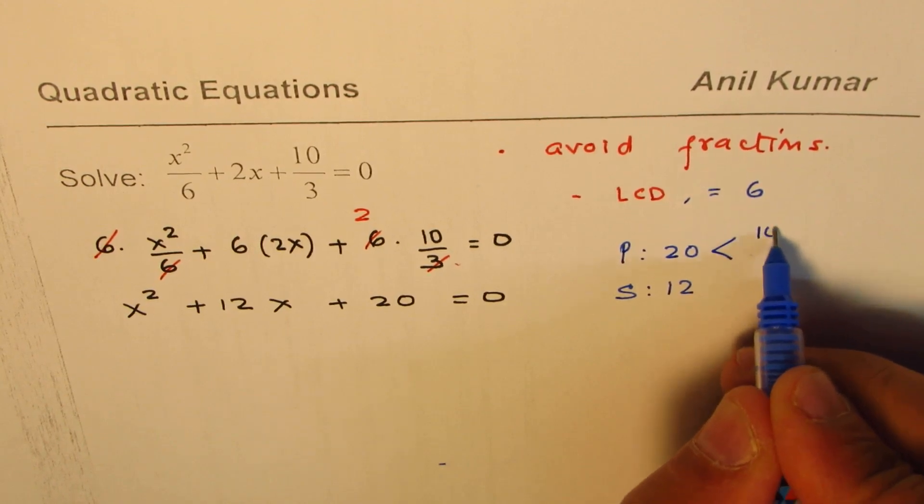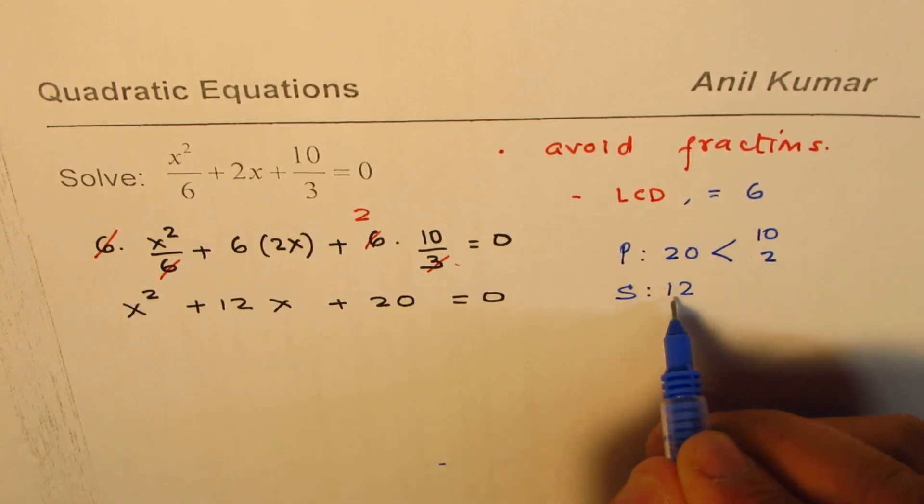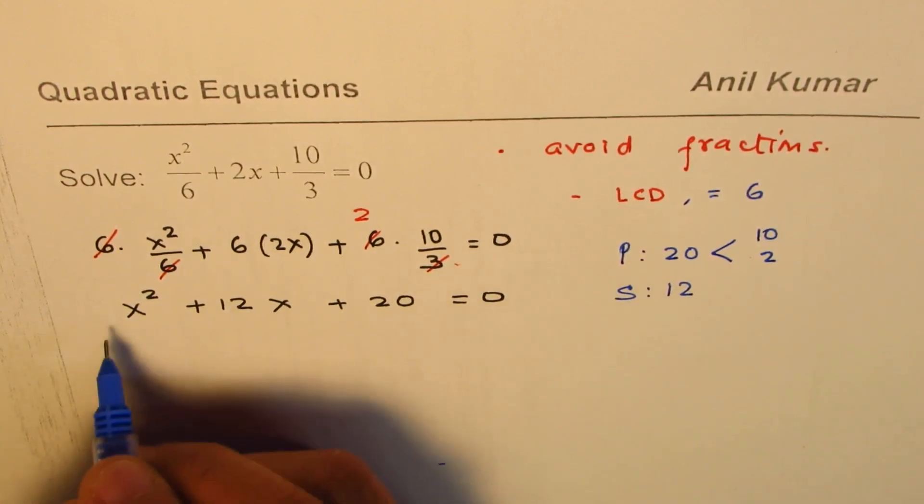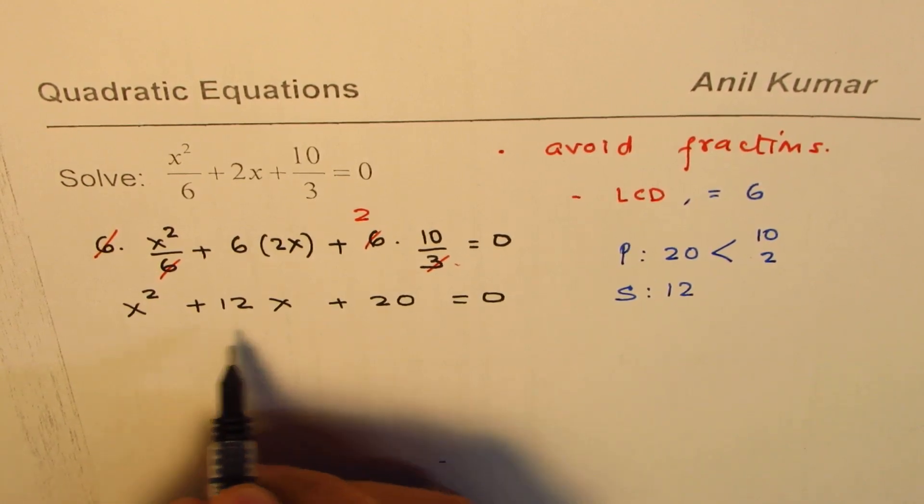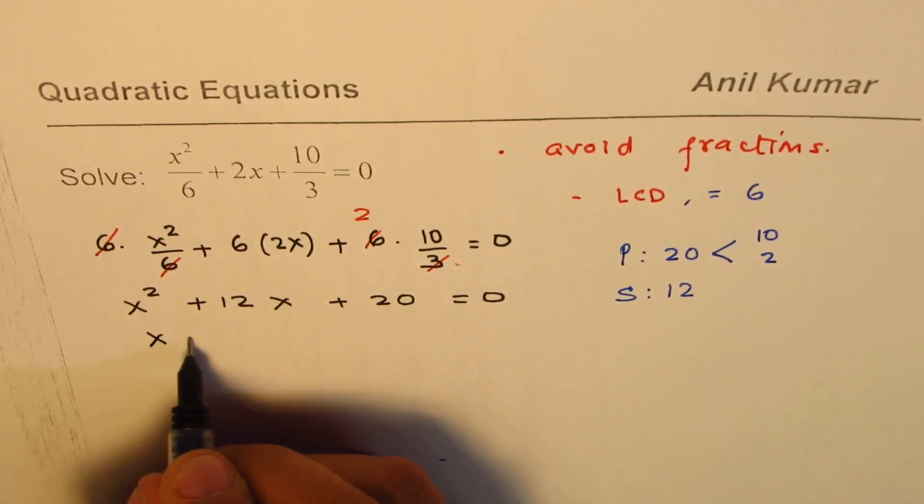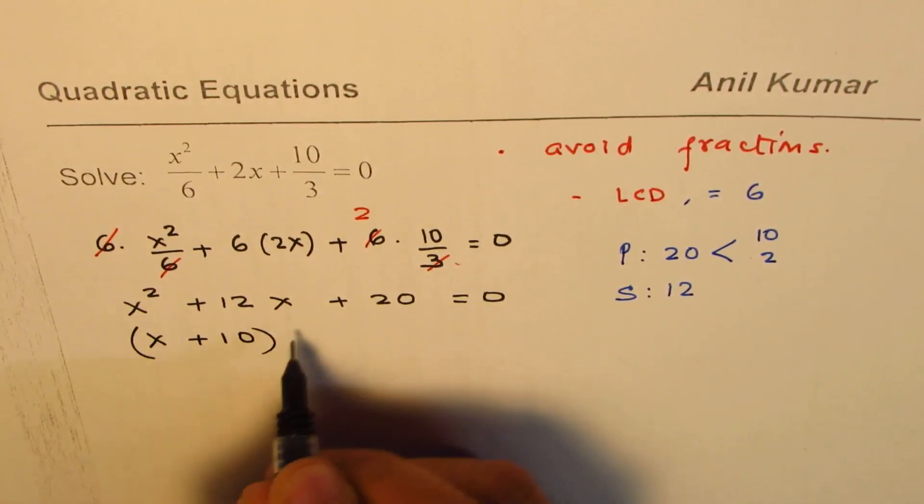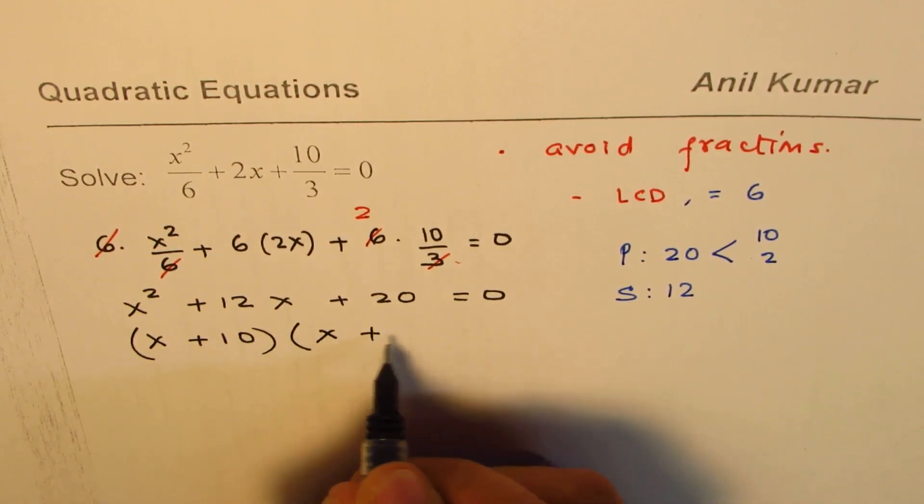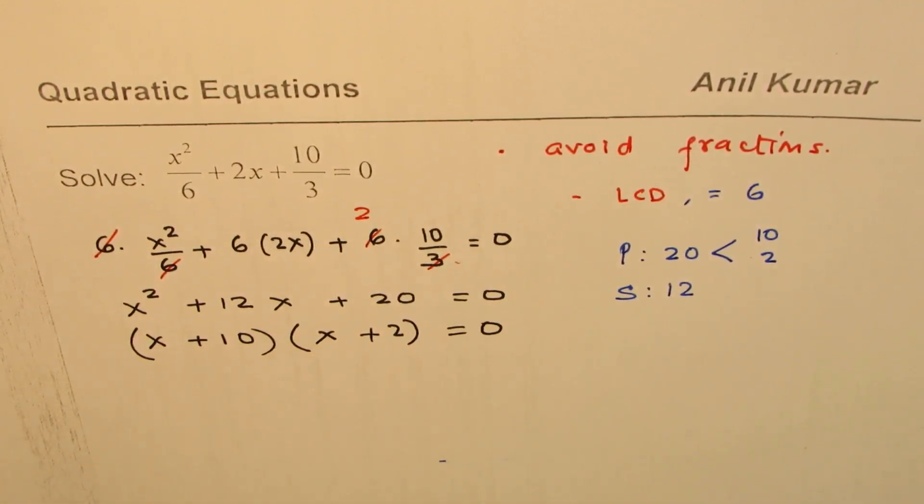So it could be 10 and 2. 10 and 2 when you add, you get 12. So now you can write it in the factored form: x plus 10 times x plus 2 equal to 0.